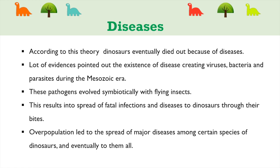According to the disease theory, dinosaurs eventually died out because of diseases. Evidence points to the existence of disease-creating viruses, bacteria, and parasites during the Mesozoic Era. These pathogens evolved symbiotically with flying insects, resulting in the spread of fatal infections and diseases to dinosaurs through insect bites. Overpopulation led to the spread of major diseases among certain species of dinosaurs and eventually to all of them.